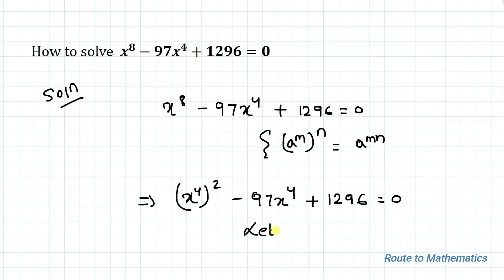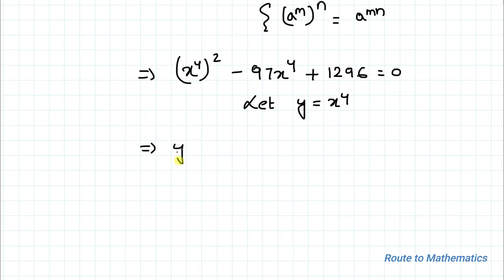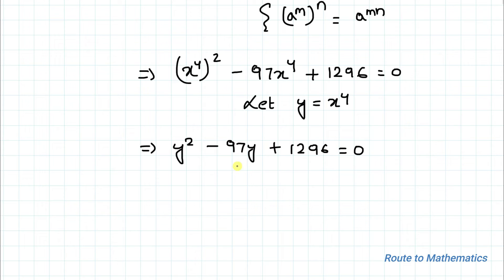Now let's take y equals to x to the power 4. Substituting the value of y, we have y squared minus 97y plus 1296 equals to 0. So here we have a quadratic equation.